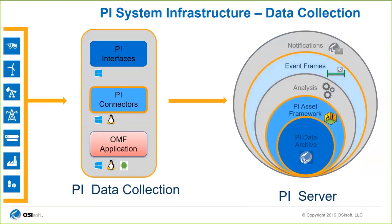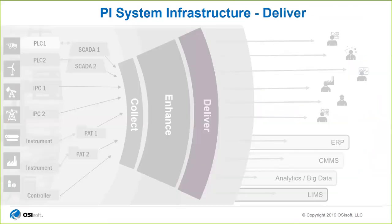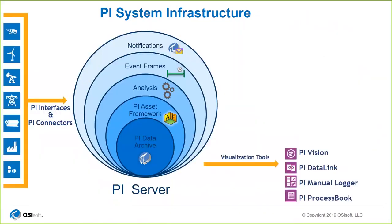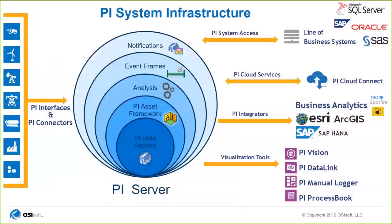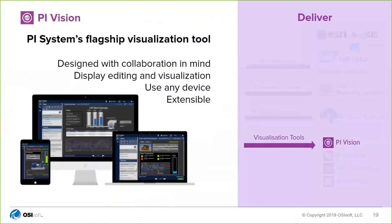When you send data to the PI System, we provide features to help you make better use of it — PI Asset Framework for contextualization, an analysis engine where you can do analytics on top of that data, event frames to put context around certain events, and notifications so you can be alerted when an exception happens.